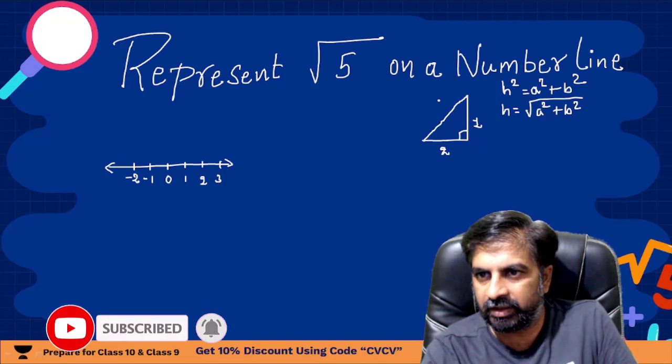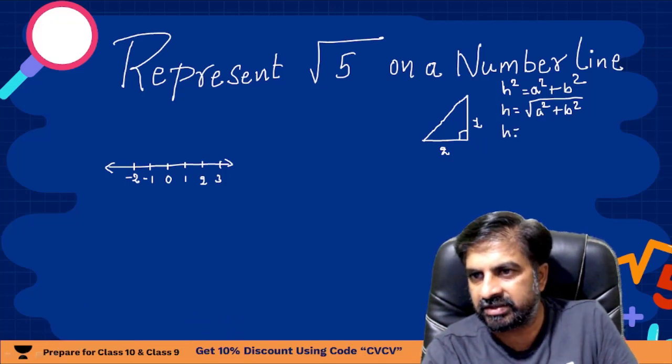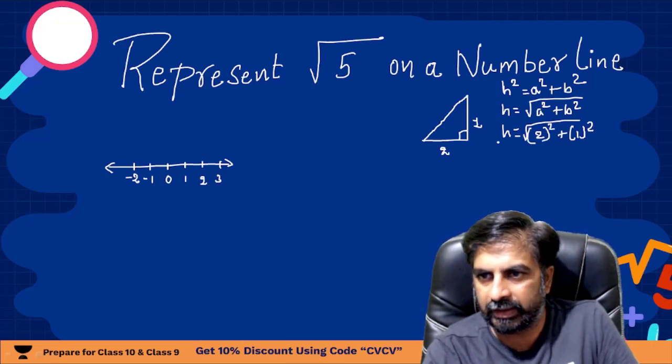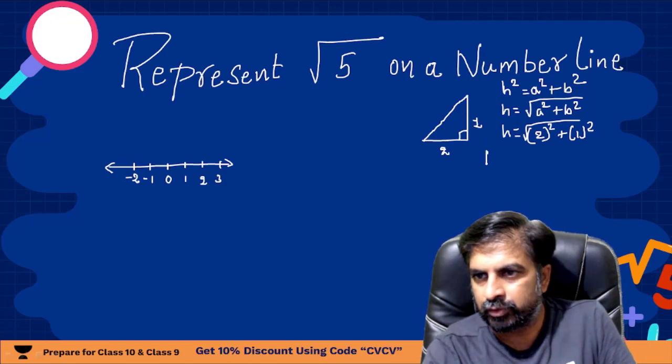Now let us see whether I am getting root 5 here or not. H is equals to under root 2 square, our a is 2, 2 square plus b is 1, 1 square. This is a, this is b. So h equals to under root 2 square is 4 plus 1 square is 1, so h will be 4 plus 1, 5, root 5.